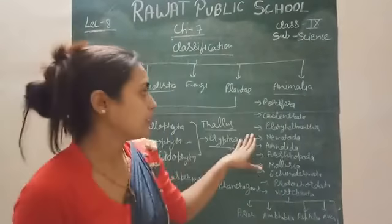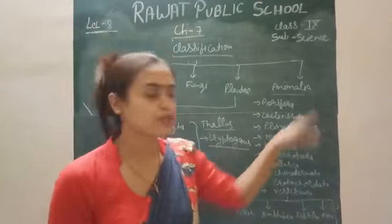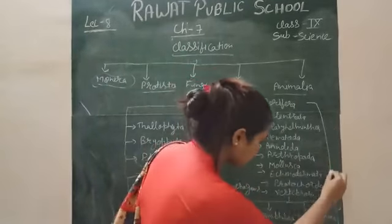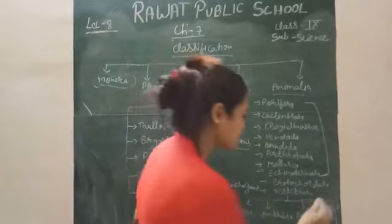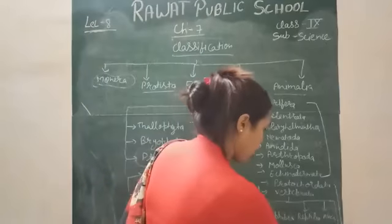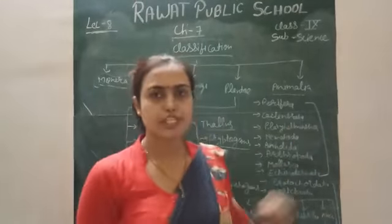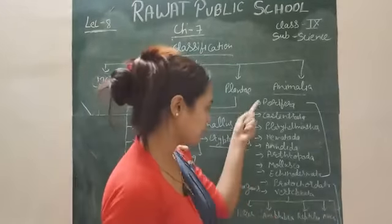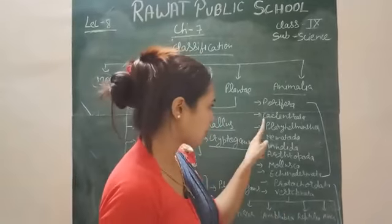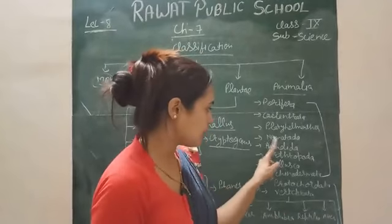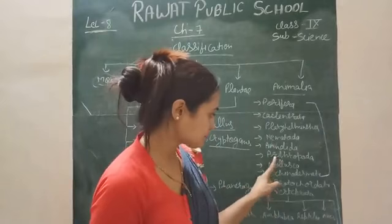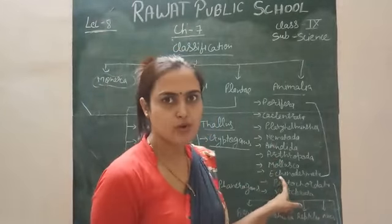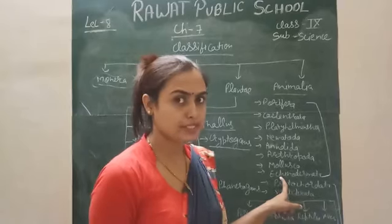Next is Animalia. Animals are divided into two categories: non-chordates and chordates. Non-chordates are animals which do not have a notochord or vertebral column. These are: Porifera, Cnidaria, Platyhelminthes, Nematoda, Annelida, Arthropoda, Mollusca, and Echinodermata — notochord is absent in these cases.